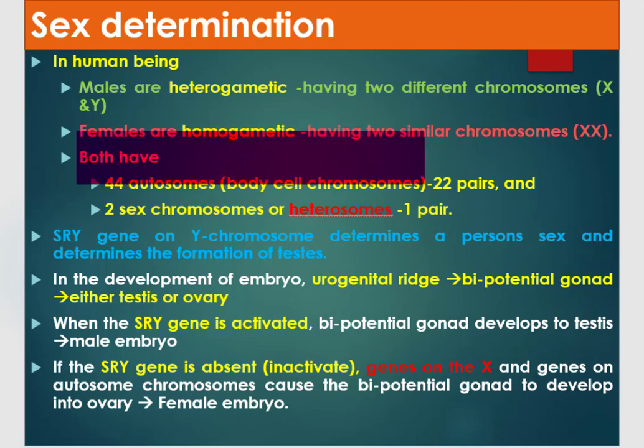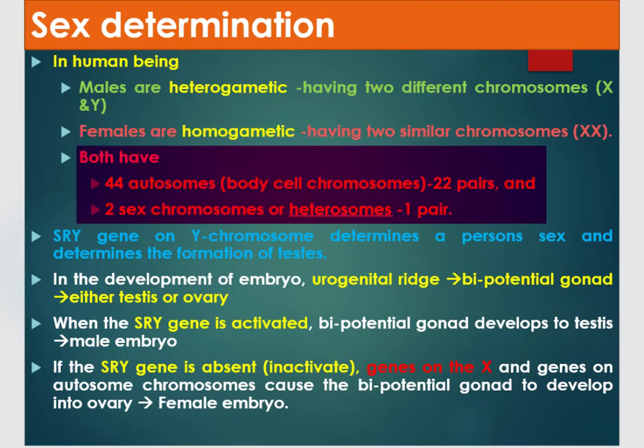Both females and males have 44 autosomes, or body cell chromosomes — that is, 22 pairs — and two sex chromosomes, or heterosomes, making one pair.